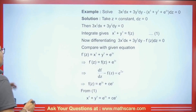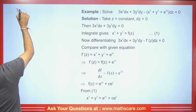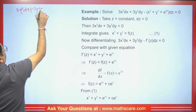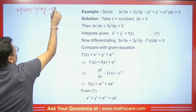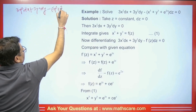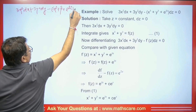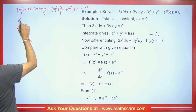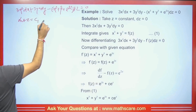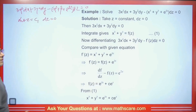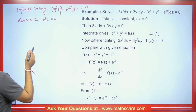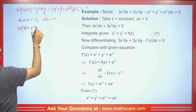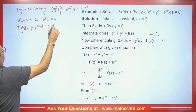Suppose we have the question: 3x²dx + 3y²dy − (x³ + y³ + e^(2z))dz = 0. We let z equal a constant, so dz = 0. When we solve this, we get 3x²dx + 3y²dy = 0.